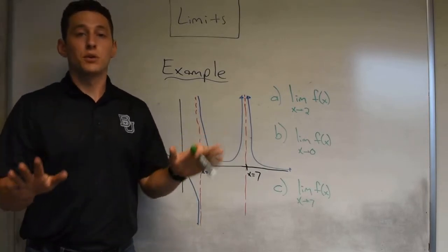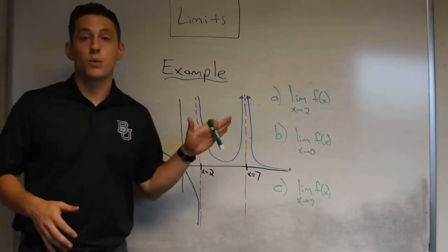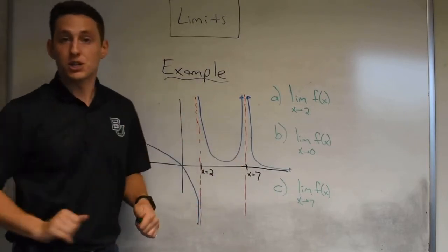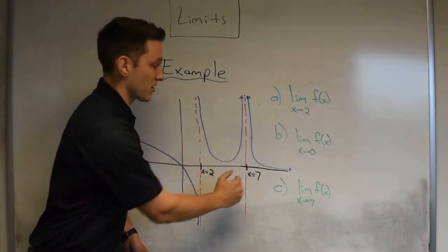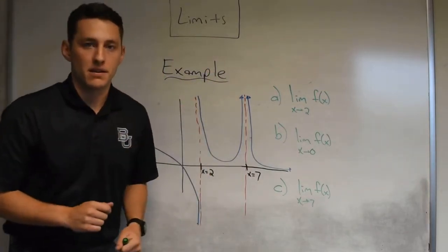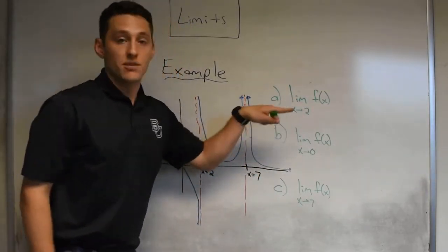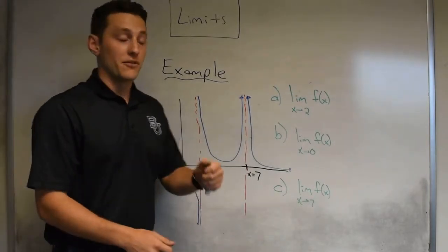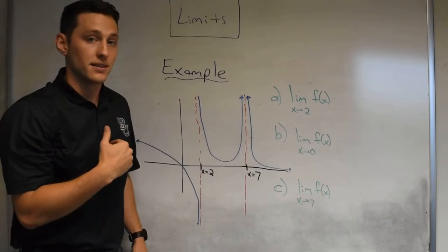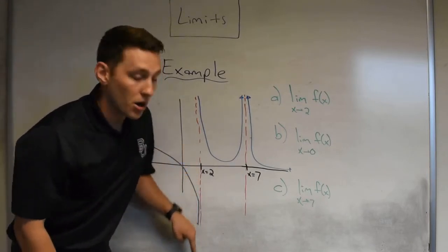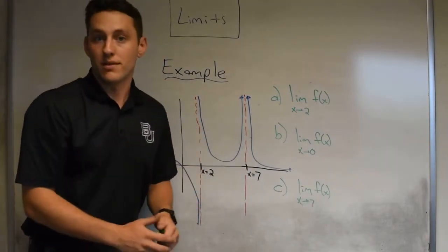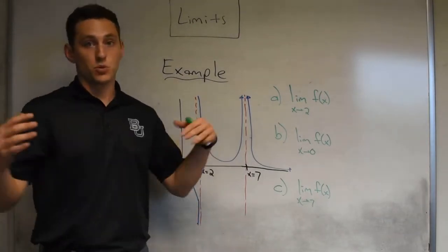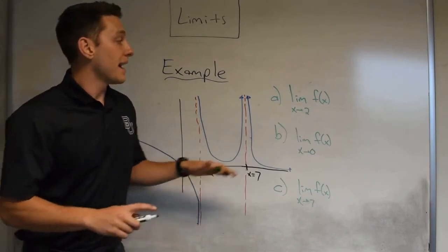We have one more example and then we'll wrap this video up. This example is going to capture what happens when we have vertical asymptotes in the picture, and it's going to tell us how important the x value is when computing a limit. Here's our function in blue. We have a vertical asymptote at x equals 2 and x equals 7. First question: what is the limit of our function as x approaches 2? The full limit exists if and only if the limit from the left hand side equals the limit from the right hand side. As we approach 2 from the left hand side, our y value tends to negative infinity — it blows up downwards. As we approach from the right hand side, our y value approaches positive infinity. Since they approach wildly different infinities, they are definitely not equal and we say the limit does not exist.